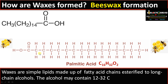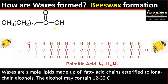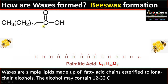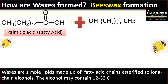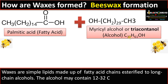For convenience, let us represent palmitic acid — this 16-carbon fatty acid — in simplified form. It combines with a long chain alcohol. This is a long chain alcohol with a carbon number of 30. Alcohols may contain 12 to 32 carbon atoms. In the case of bee wax, this is myricyl alcohol, also called triacontanol. So a long chain fatty acid combines with a long chain alcohol.